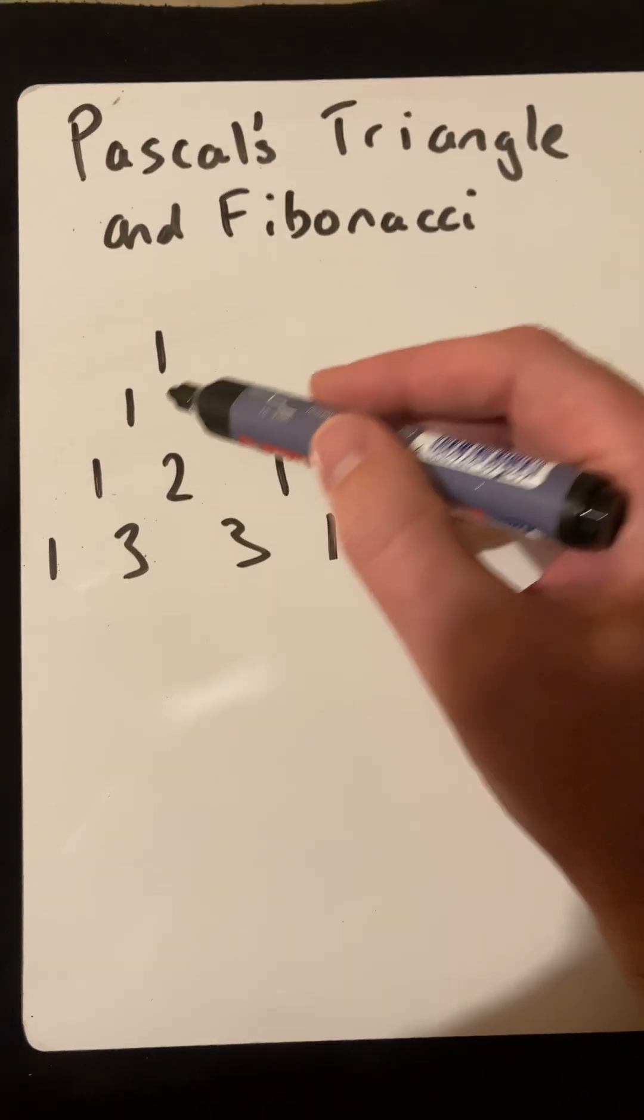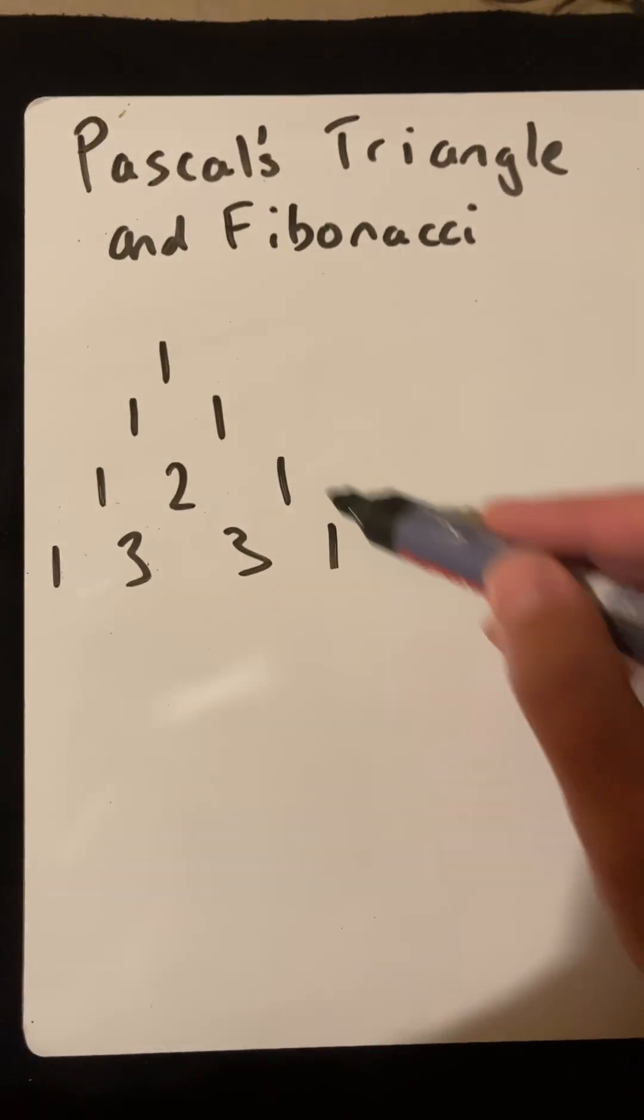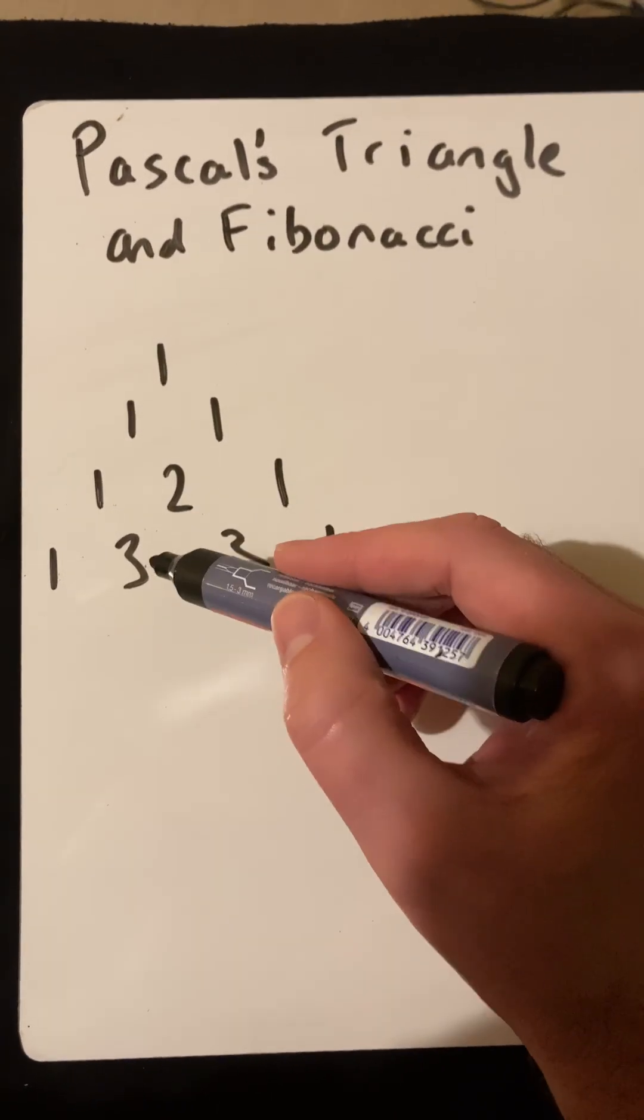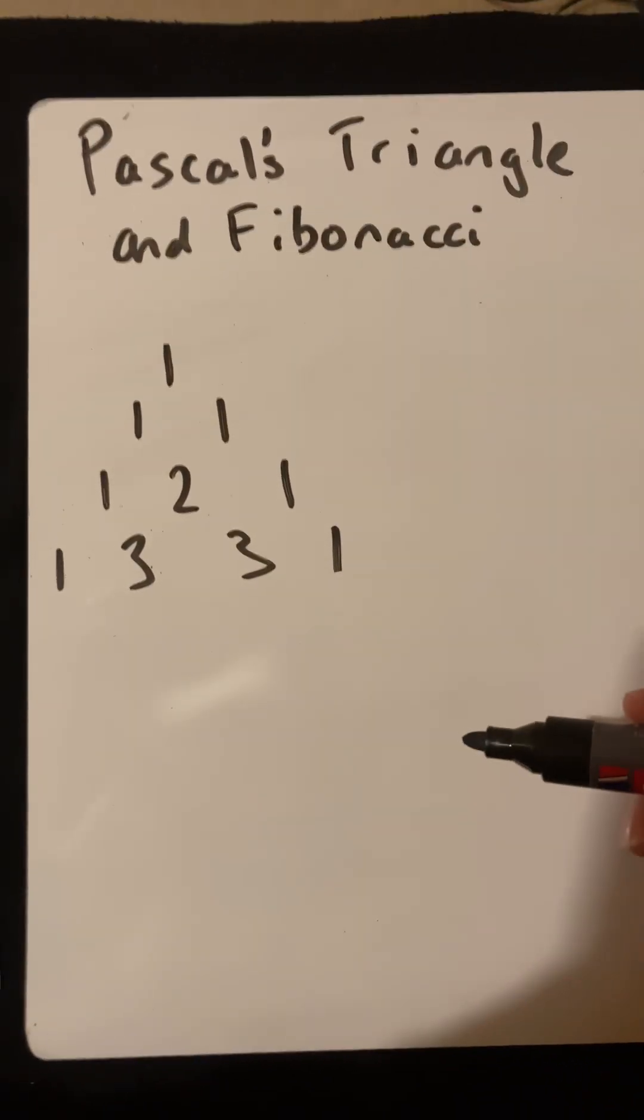So Pascal's Triangle starts with 1 and then it keeps growing with 1 each side, and the middle numbers sum to 2 there. 1 and 2 becomes 3, 1 and 2 is 3, and it'll keep growing like that.